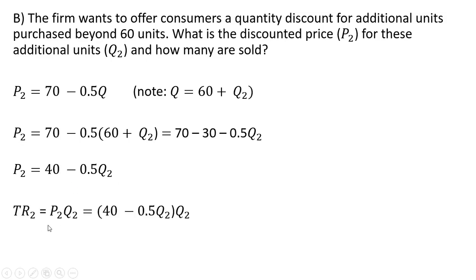Once again, setting up total revenue as price times quantity. Here our price equation now is 40 minus 0.5 Q subscript 2 multiplied by Q subscript 2. Simplifying that by multiplying through by what's in parentheses.